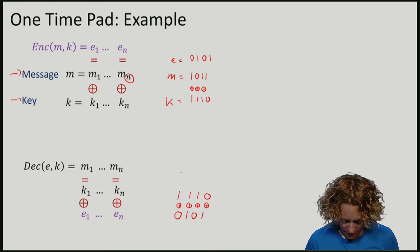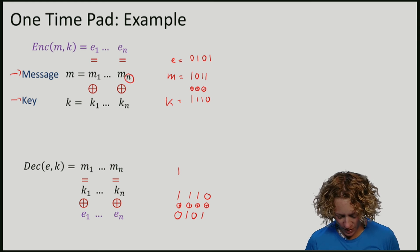So the first one gives me 1. 1 XOR 0 is 1. The second one, 1 XOR with itself gives me 0. 1 XOR with 0 gives me 1, and 0 XOR with 1 gives me 1.